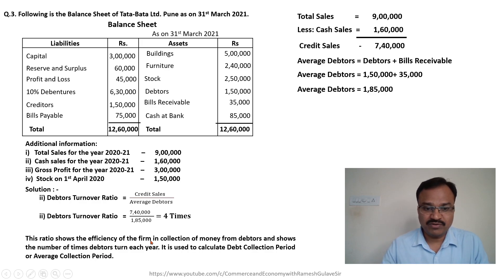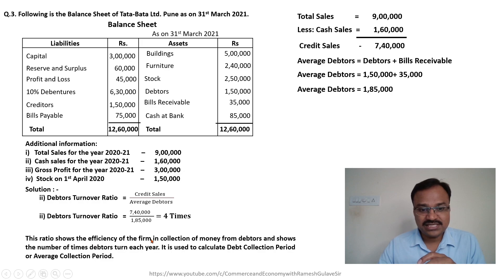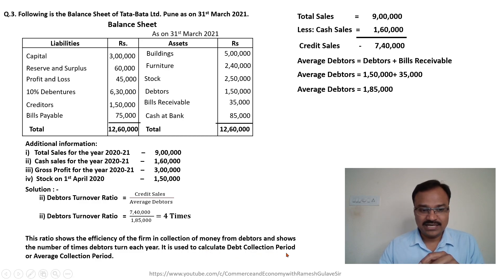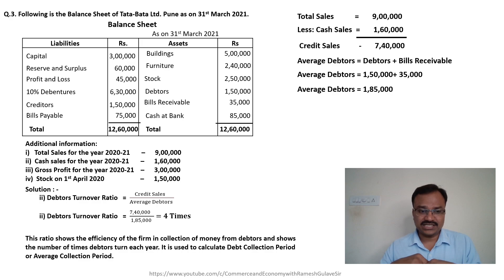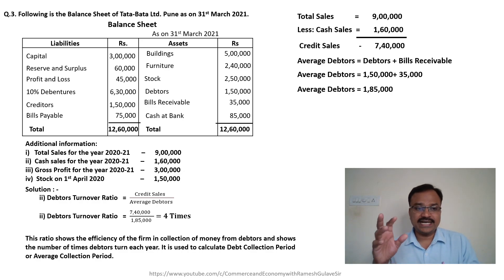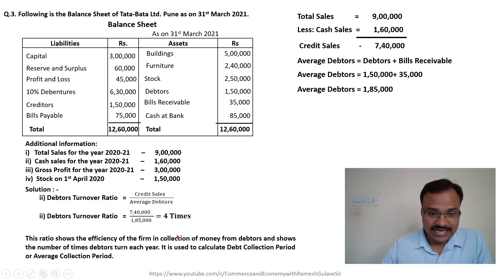Debtors turnover ratio shows the efficiency of the firm in collection of money from the debtors and shows the number of times debtors turn into cash each year. We know that if the amount from debtors is not collected, it is very bad for the business. So it is necessary that we collect the amount from debtors on time, and this ratio shows that efficiency of the business. Here debtors turnover ratio is four times, meaning in a year the business has collected money from debtors four times.